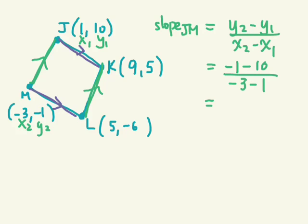It doesn't matter what order you do it in as long as I could have called this coordinate X1 and Y1, but I just chose X2 and Y2. Negative 1 take away 10. Negative 11. Negative 3 minus 1 is negative 4.